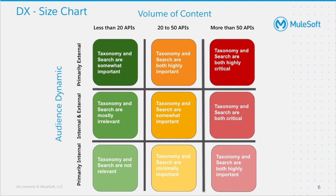As you can see on the slide, for primarily external audience who use less than 20 APIs, taxonomy and search are only somewhat important, as compared to those who use 50 APIs where taxonomy and search are highly critical.